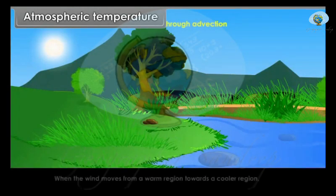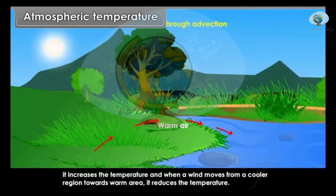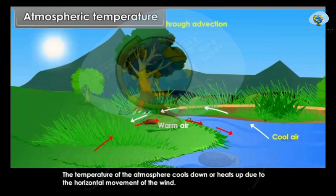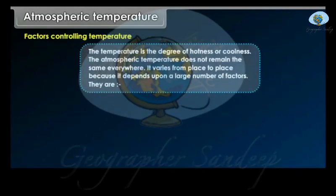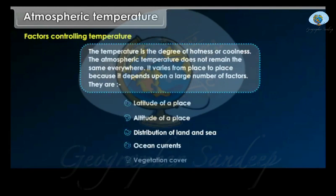Through Advection. When the wind moves from a warm region towards a cooler region, it increases the temperature. And when a wind moves from a cooler region towards a warm area, it reduces the temperature. The temperature of the atmosphere cools down or heats up due to the horizontal movement of the wind. Factors Controlling Temperature. The temperature is the degree of hotness or coldness. The atmospheric temperature does not remain the same everywhere — it varies from place to place because it depends upon a large number of factors: latitude of a place, altitude of a place, distribution of land and sea, ocean currents and vegetation cover.